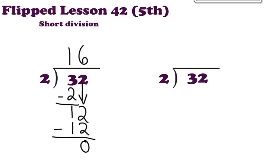Short division is basically going to get rid of showing all that work underneath the actual division problem. Instead we're going to do a little bit more mental math to help us get through a simpler division problem. So we say 2 goes into 3 — 1 time. 3 minus 2 gives us a 1 left over. Instead of bringing down the 2, we put that 1 right there next to the 2, making a 12. Now 2 goes into 12 six times. 6 times 2 is 12 — no remainder.